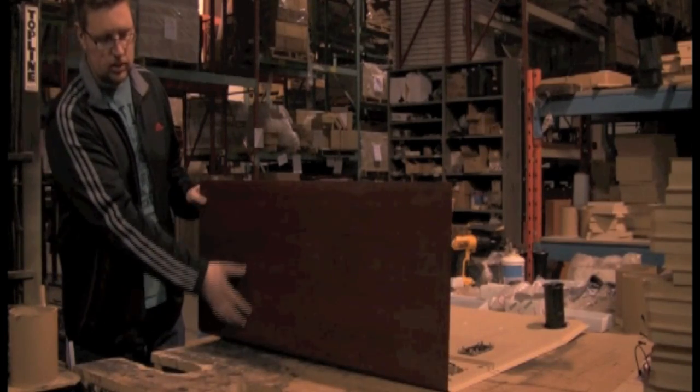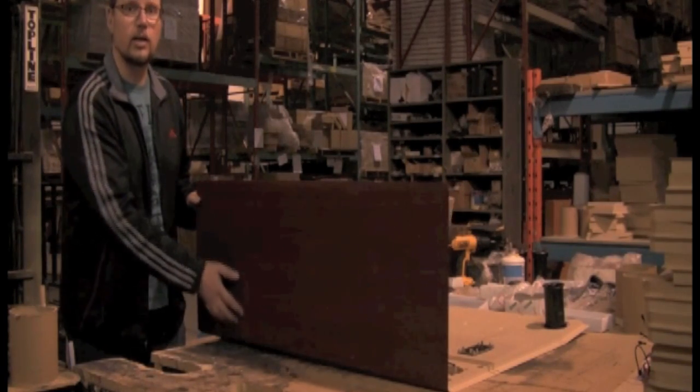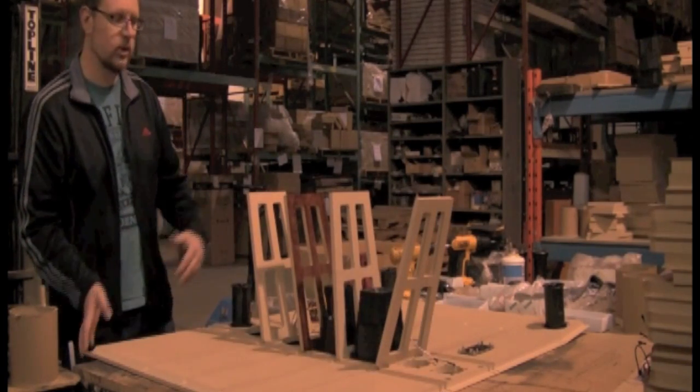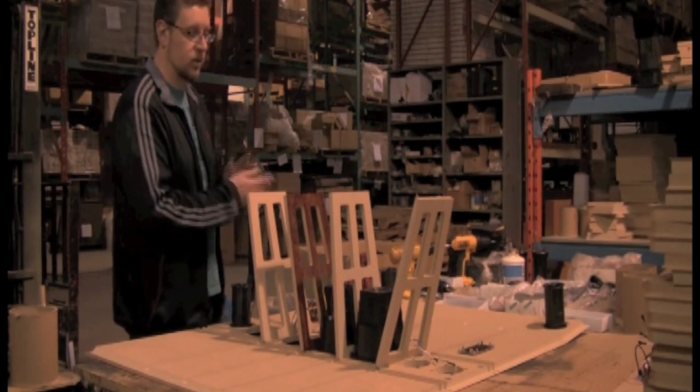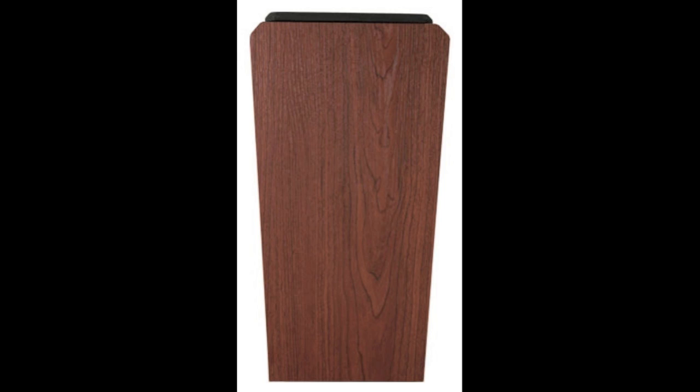And in this case, the vinyl is actually providing the hinge to allow us to fold these front, back, and sides together to make the cabinet. And then all we have to do is add the top and bottom pieces.